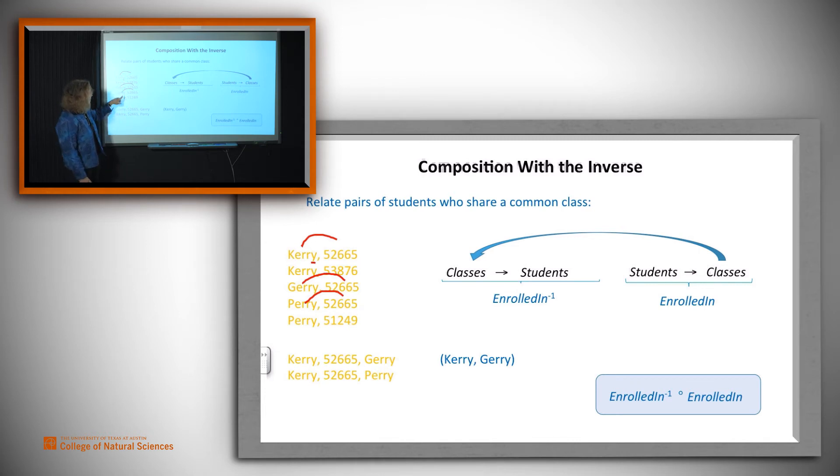It's going to relate Cary to Perry, and it's going to relate, say, Perry to Jerry, Perry to 52665, and 52665 back to Jerry. There you go.